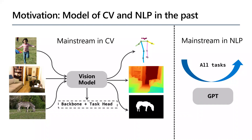Our motivation mainly comes from the rapid development of current NLP and the unification trend of CV. In the past, specific models are designed for different computer vision tasks, but one GPT model can handle almost all natural language tasks. We believe that the key obstacle to a unified visual model is the inconsistency in visual representations — for example, we need box coordinates in object detection, coordinates or heat map representation for keypoints, binary mask for instance segmentation, and depth map for depth estimation.